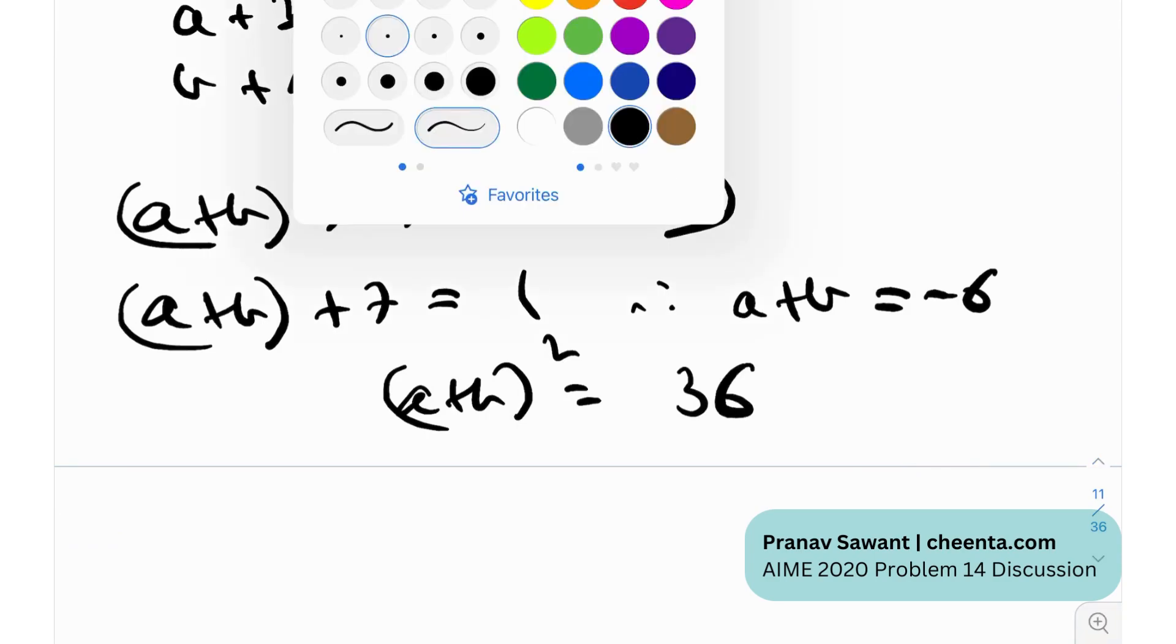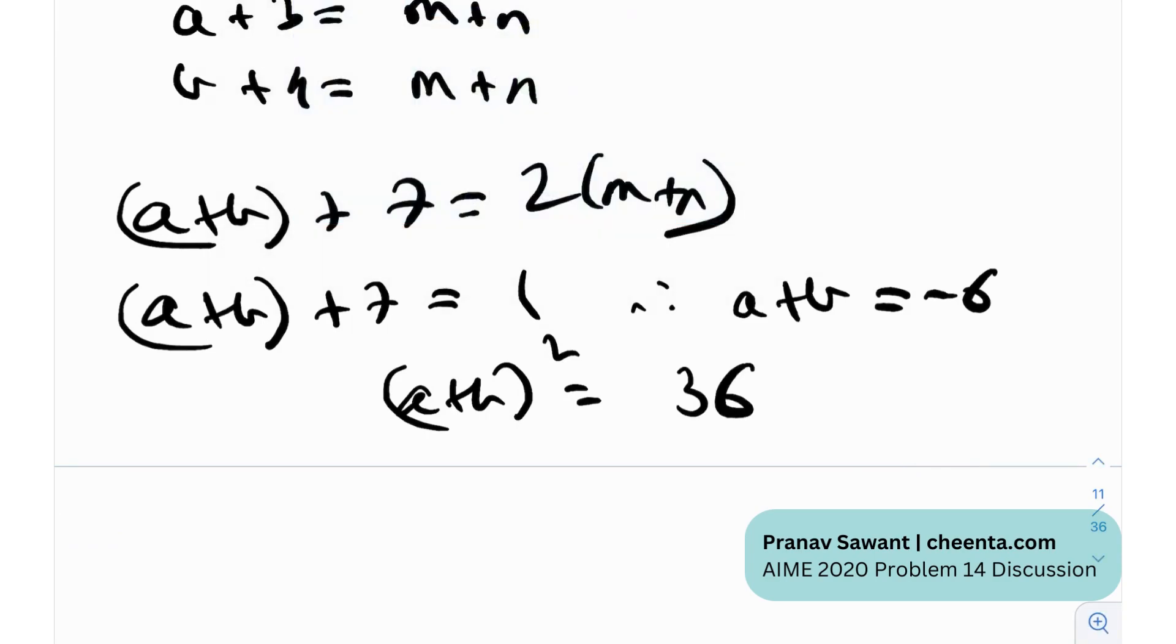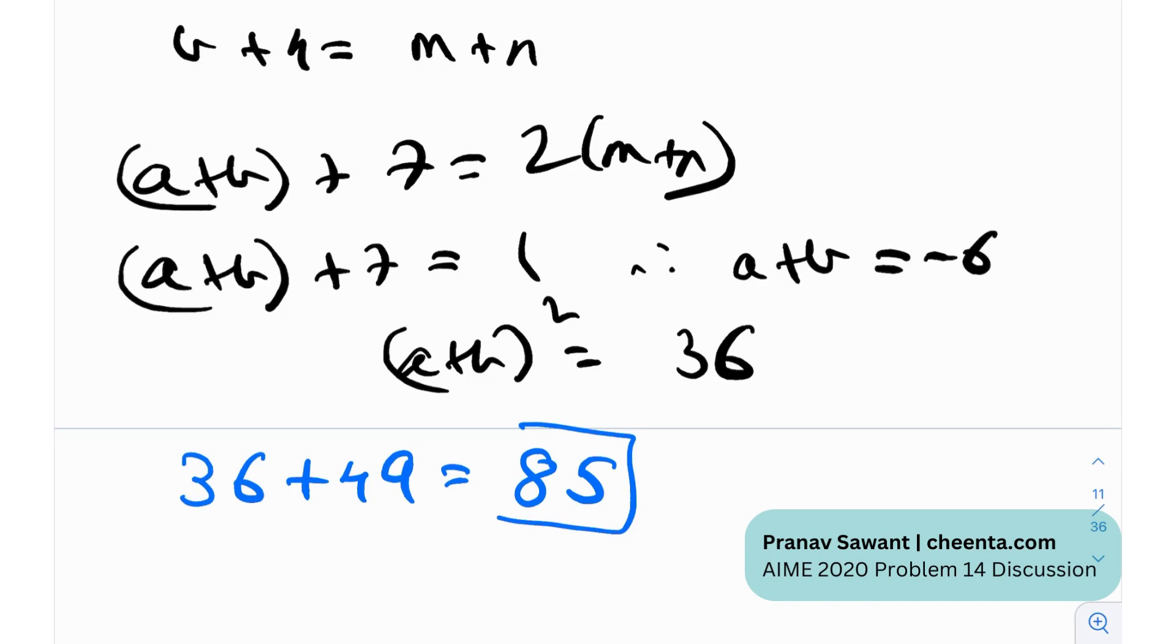The sum of the two values of a plus b whole squared, that was k1 plus k2 equals 36 plus 49, which becomes, I believe, 85. 49 plus 36 is 85. So yes, the correct answer in this case would be 85.